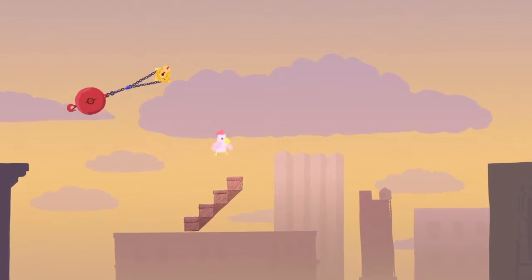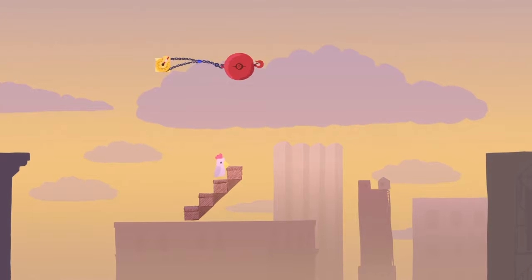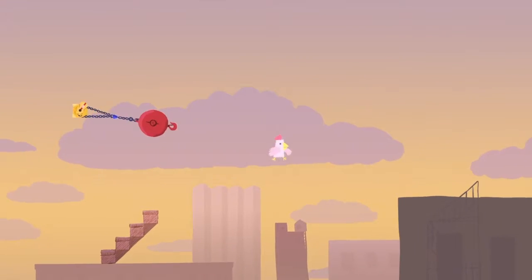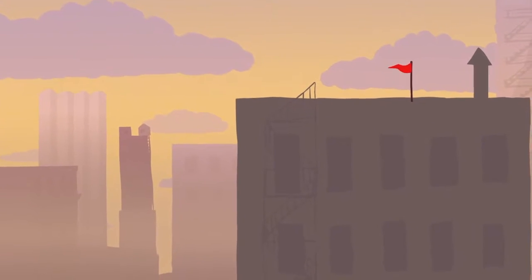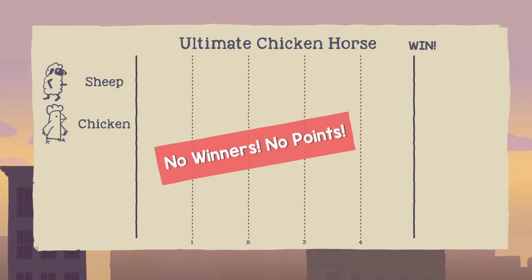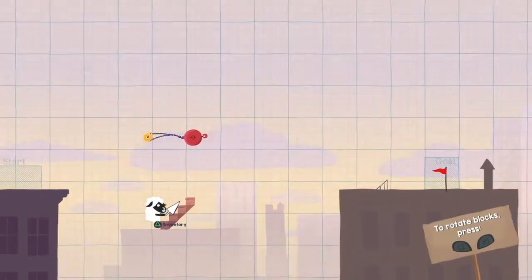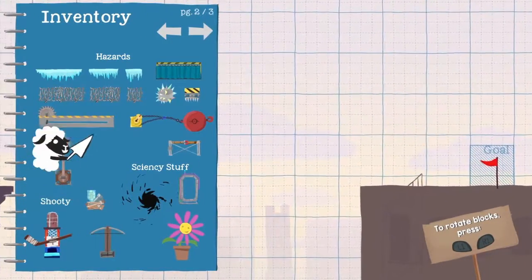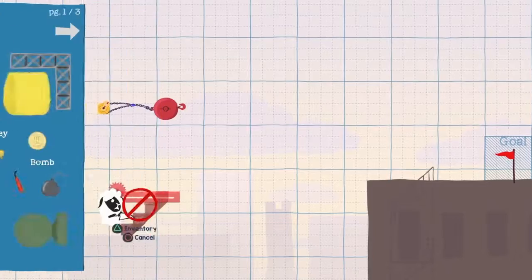Each turn you get to place two items on the screen, and they can range from platforms to traps to thingamajiggies, like some kind of machinery, your normal kind of level building type of stuff.